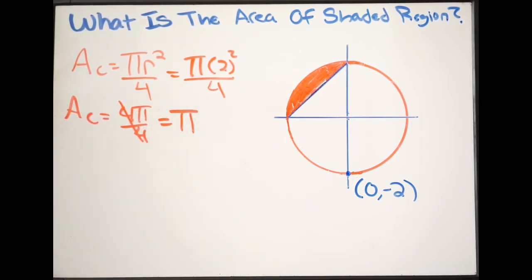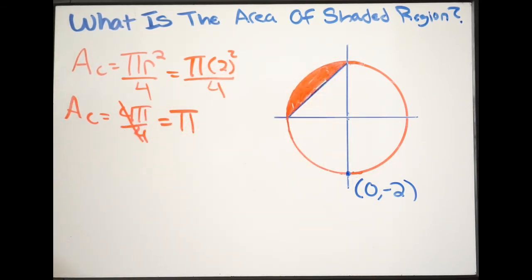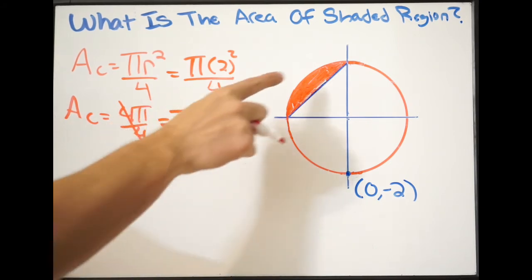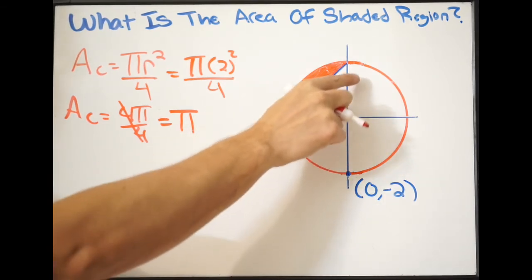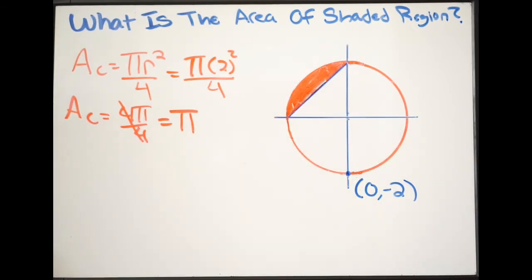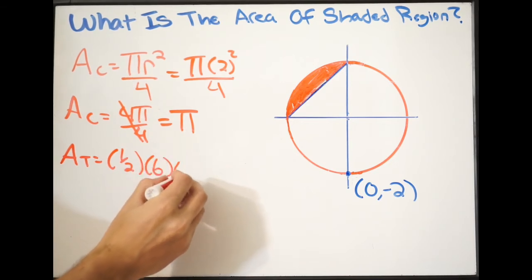So what we essentially just did is we got this area right here, in that quadrant. Now we want to get the area of our triangle. So we can see that we have a right triangle here. And again, here's my base, here's my height. Well, it's just going to be the radius there. So my base is going to be my radius, and my height is going to be my radius.